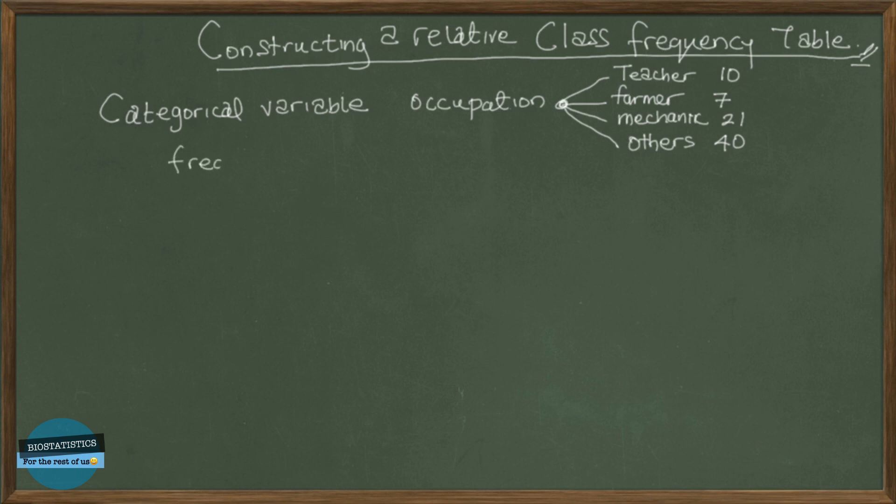So when we say frequency, what do we basically mean here? We mean just the number of times in which these particular values occur. So how many times teachers occur? So the number of times that the value occurs, the data value occurs, is the frequency.